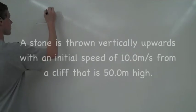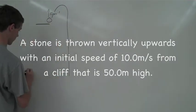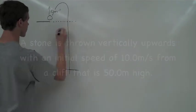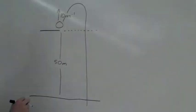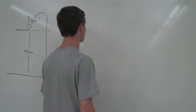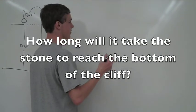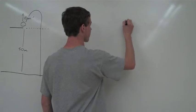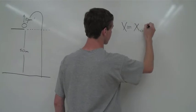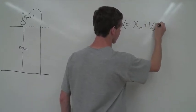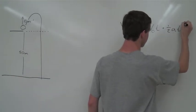The questions being answered here involve a situation in which a stone is thrown vertically upwards with an initial velocity of 10 meters per second from a cliff that is 50 meters high. The first part of the problem is to find when the stone reaches the bottom of the cliff. To solve this, we'll use the equation: final displacement equals initial displacement plus initial velocity times time plus one-half acceleration times time squared.